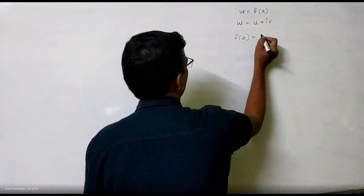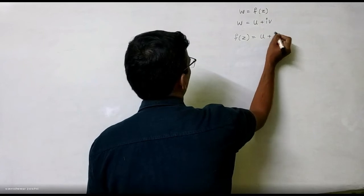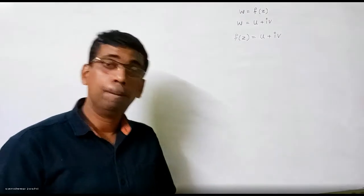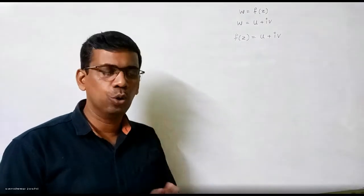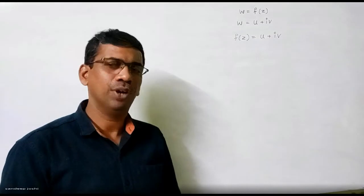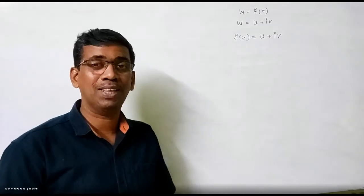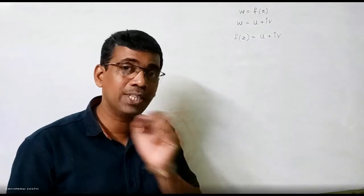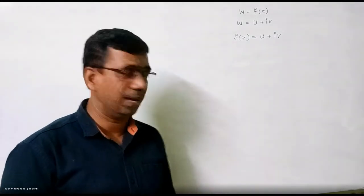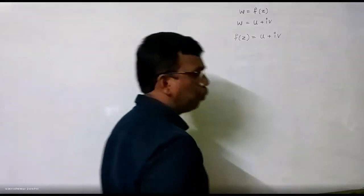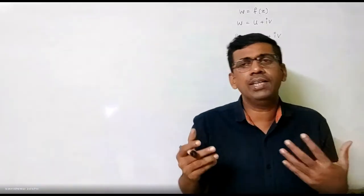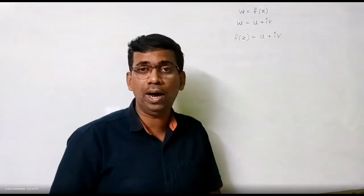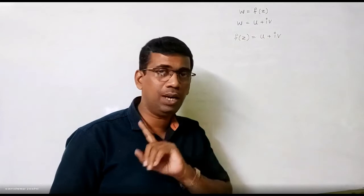What is F of Z? It is U plus IV. And Dostoy, today we have to look at the derivative of F of Z. What is that line? Differentiating with respect to X or differentiating with respect to Y. A key used to make it as well.